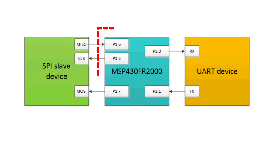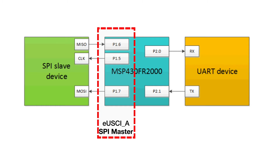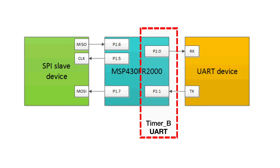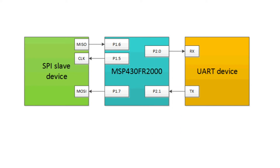In this example, the enhanced universal serial communication interface is used as a spy master on one side of the bridge. The other side is a UART, which is generated using a Timer B peripheral. The system supports bi-directional communication over the bridge and is triggered by a data byte being received by the MSP430 MCU's UART. This data is then sent to the spy port's transmit buffer and transferred over the spy bus to the slave device. A data byte received over the spy bus will then be sent back over the bridge and transmitted over the UART.